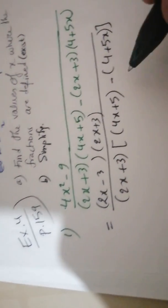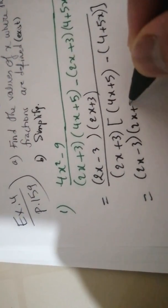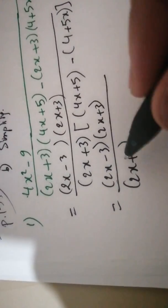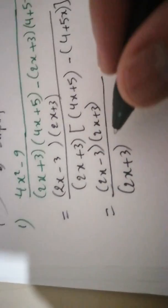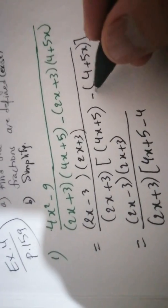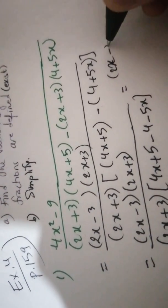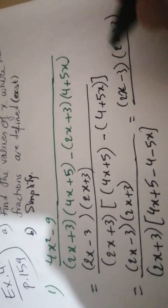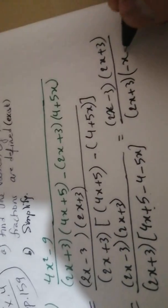Now we have to simplify the small brackets. We have (2x plus 3) over (2x plus 3). Notice that you can't simplify yet because you haven't found the condition yet — we can't change the condition after we find it. So we get 4x plus 5 minus 4x minus 5x inside the bracket.